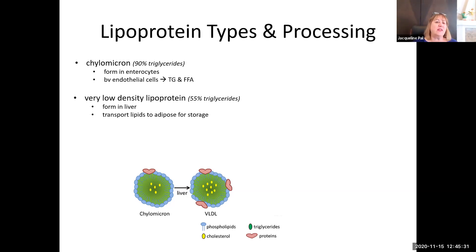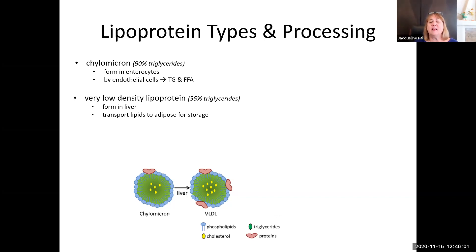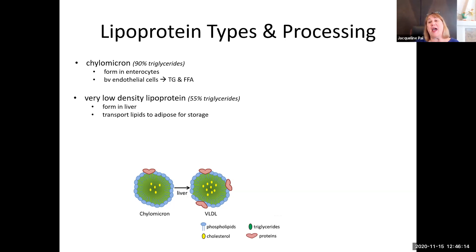When the chylomicron hits the liver, a couple of things happen. The core has changed — it is no longer 90% triglyceride. It has picked up a bunch of cholesterol and is still over 50% triglycerides, but it now has a significant amount of cholesterol. In addition, it has picked up more protein on the outer surface. This lipoprotein is now known as a VLDL, or very low density lipoprotein, and it will be transported to adipose tissue where further modifications occur.